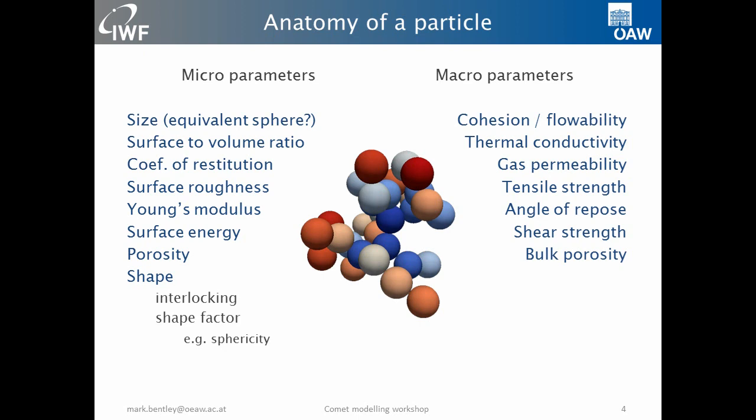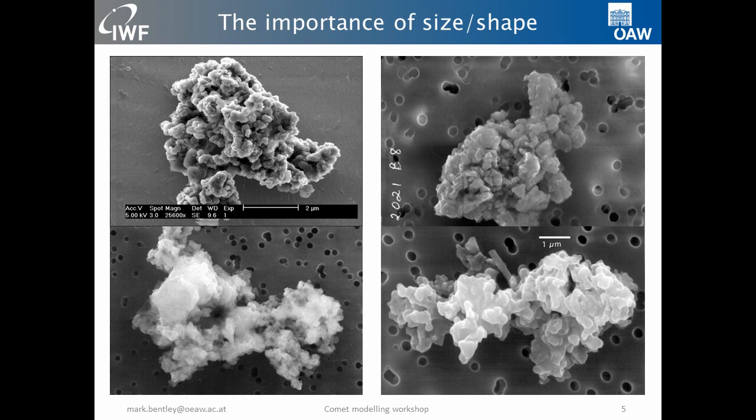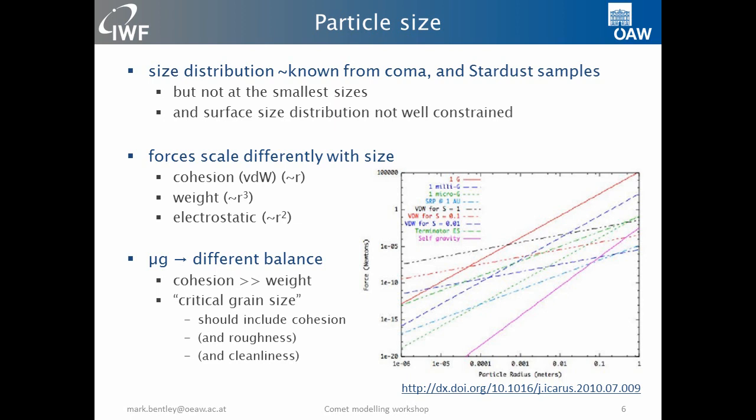Clearly the size and shape of particles are important. We try to model them with spheres because spheres are easy, but the evidence from light scattering, from IDPs, and so on, tells us that we're probably dealing with complex shapes, and we have to think about how this influences the larger scale parameters. Size matters because different forces scale differently. Looking at Scheeres et al. on forces on asteroid surfaces, it becomes clear that even for chunky-sized particles, cohesion between two particles — simple van der Waals adhesion — is an important force that you have to include in your models.